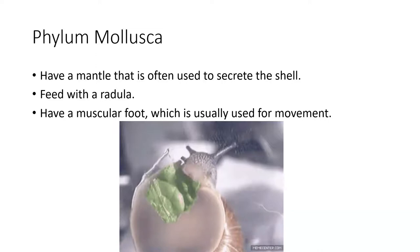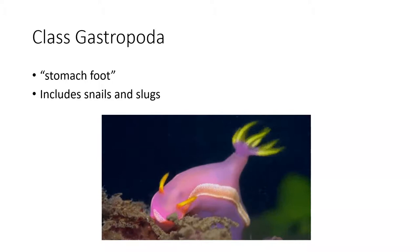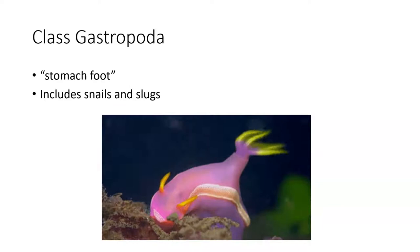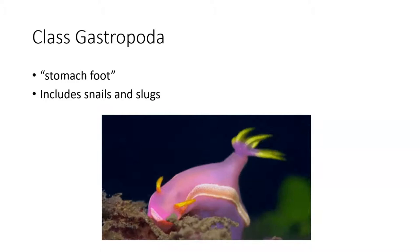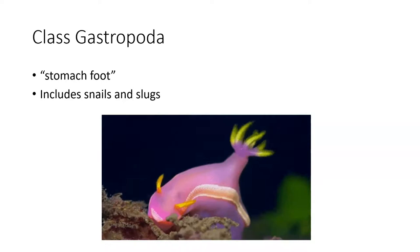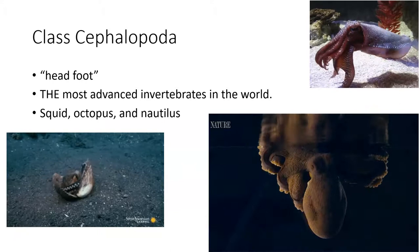Class Gastropoda literally means 'stomach foot' — gastro is stomach, poda is foot, so their stomach is in their foot. This is where snails and slugs go. Sea slugs live in the ocean and are often brilliantly colored. They also have tentacles with eyes at the tips. Class Cephalopoda means 'head foot' — their foot has been modified into a head structure.